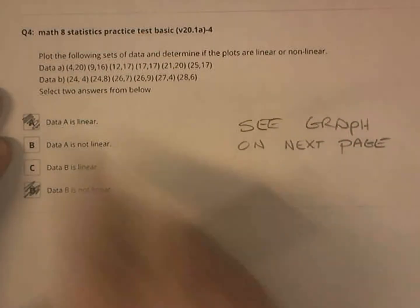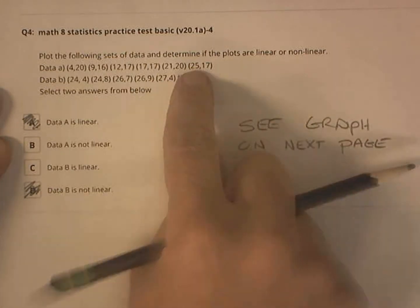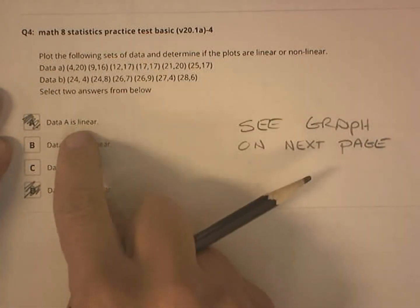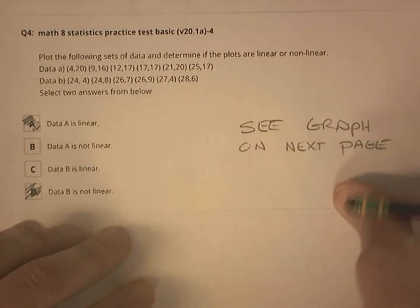Next one, asking which set of data is linear and nonlinear. Well, this one's linear, and the second one is nonlinear. So A is linear, B is nonlinear. How did I do that? Well, I graphed it.